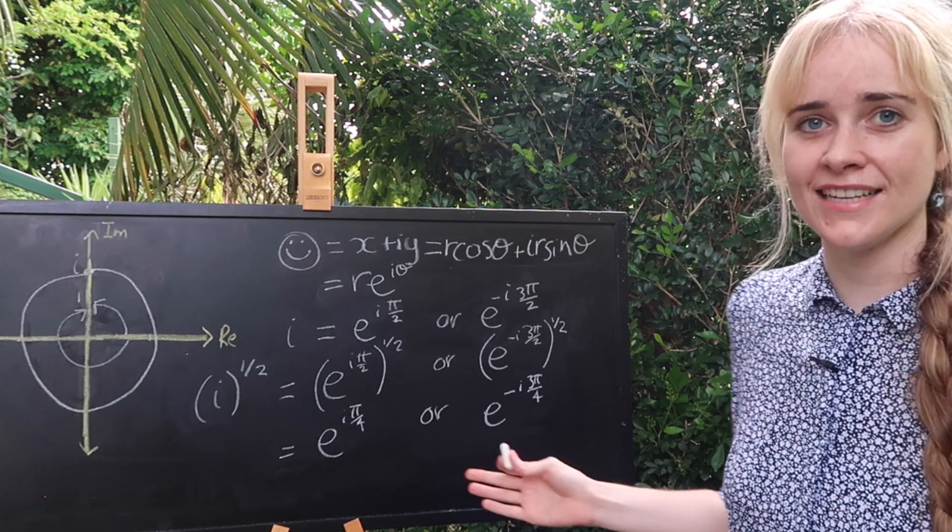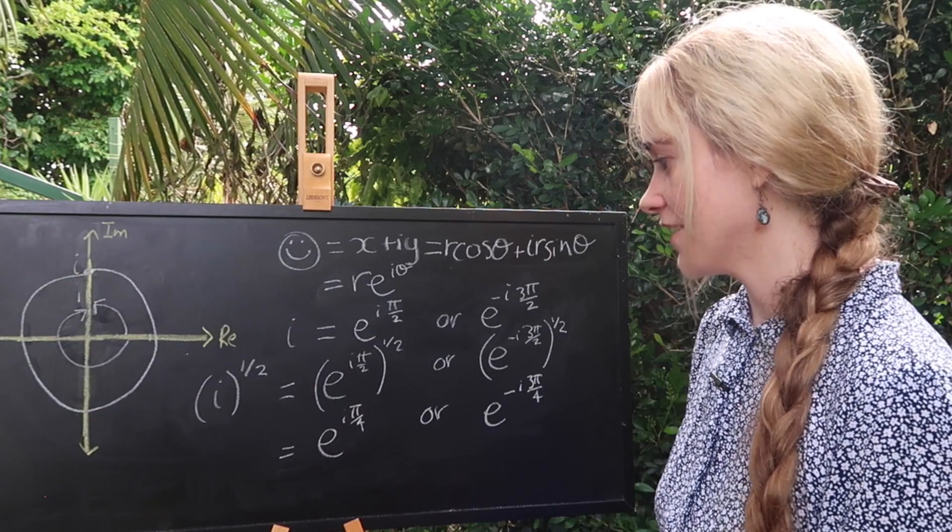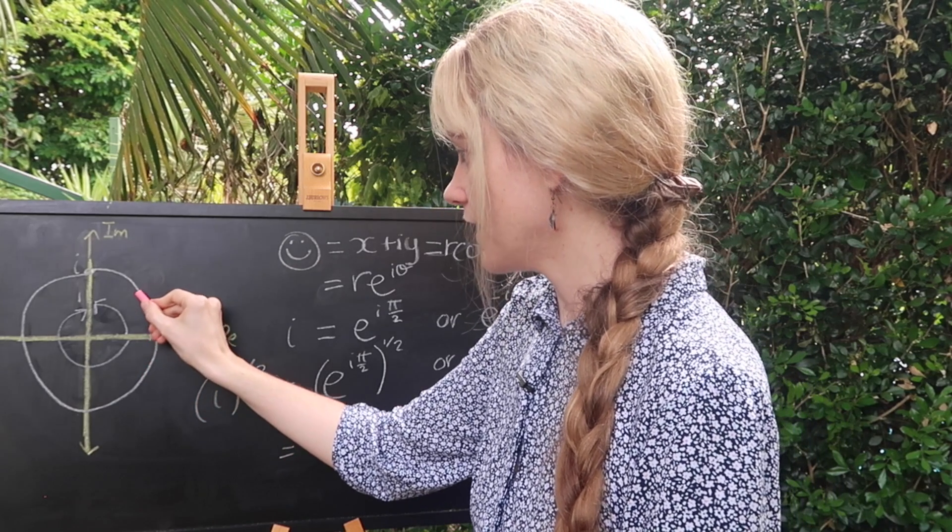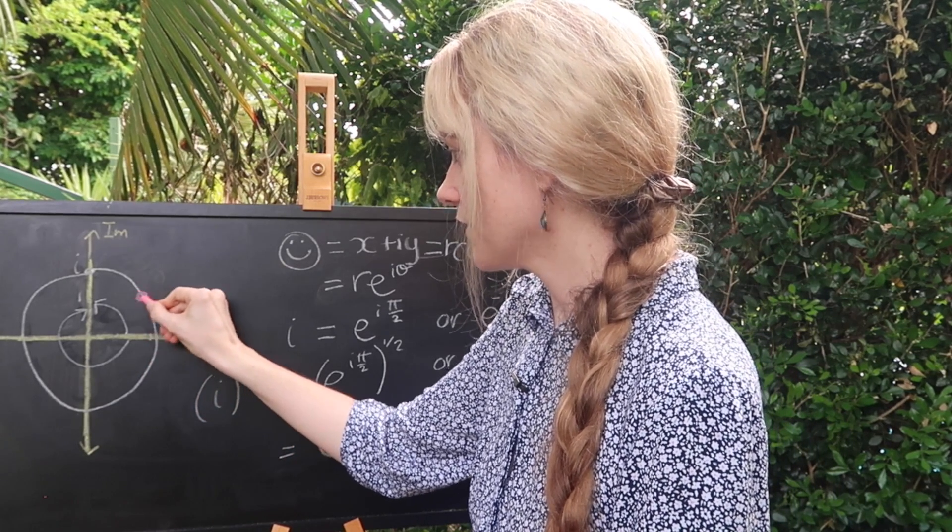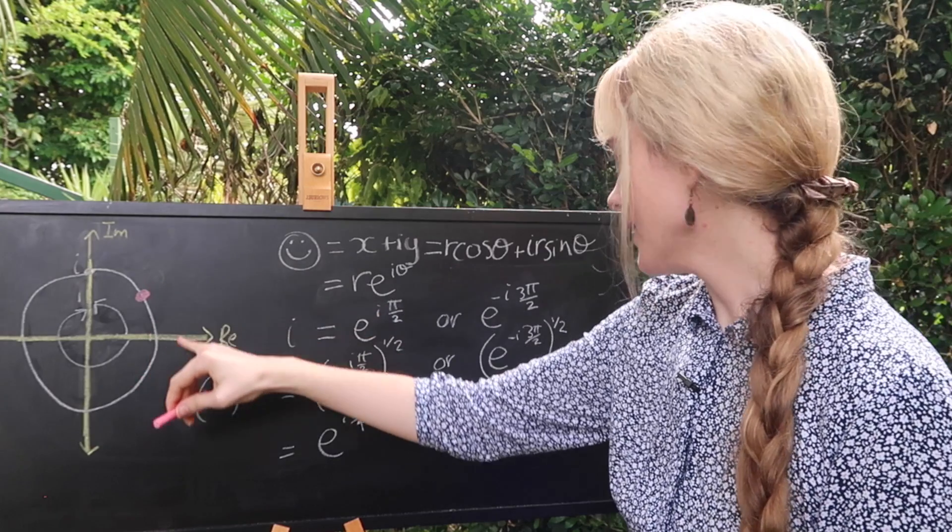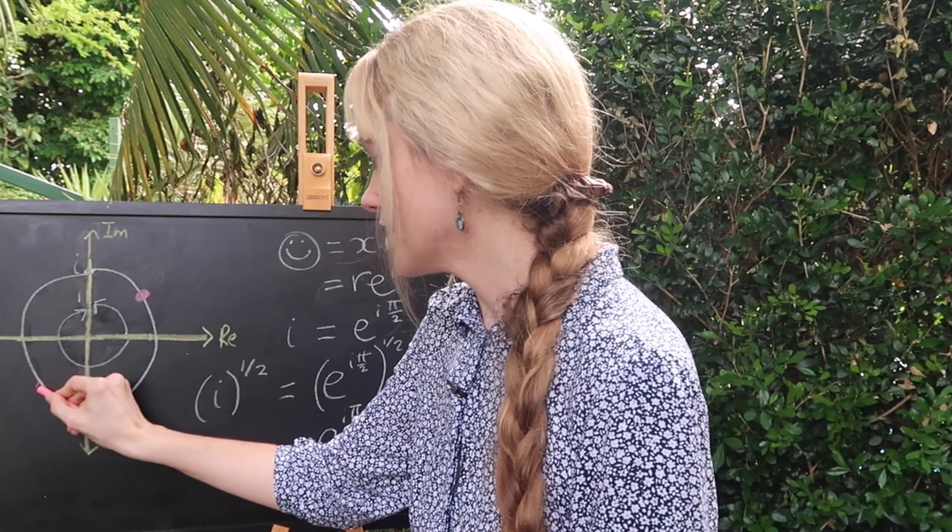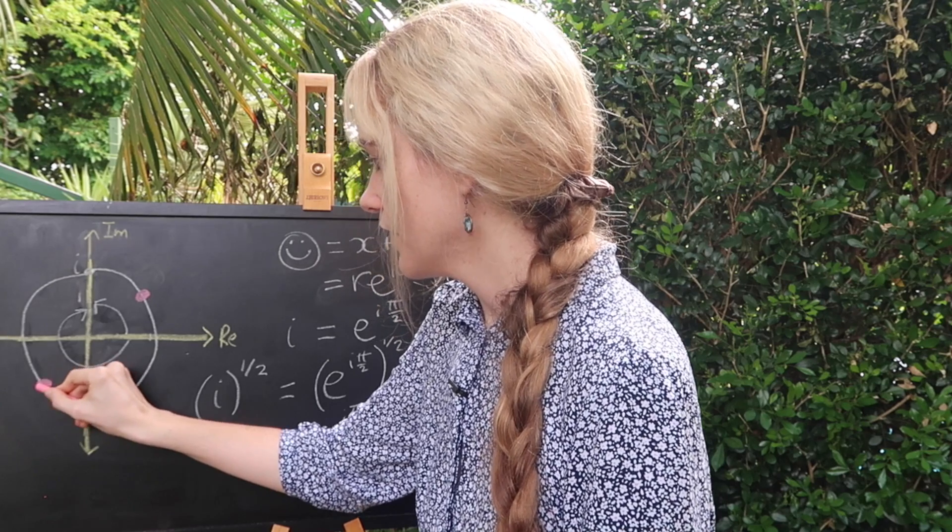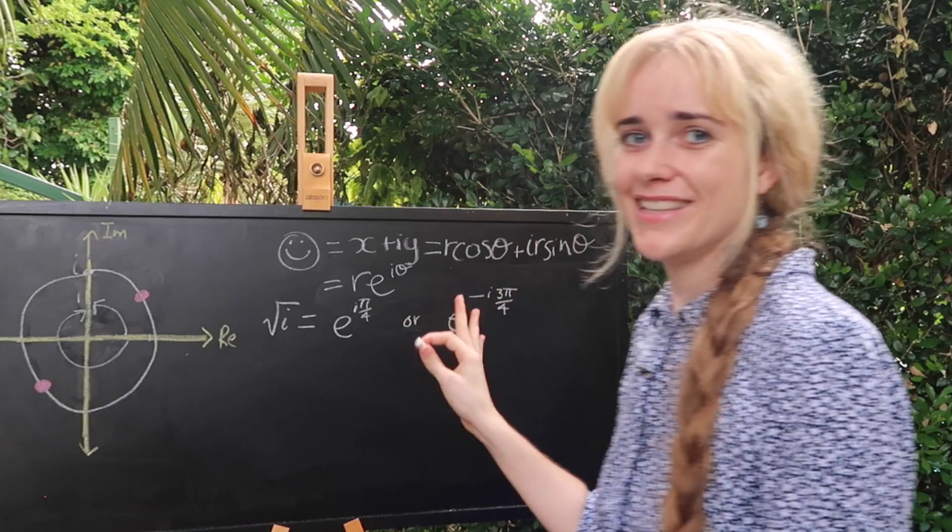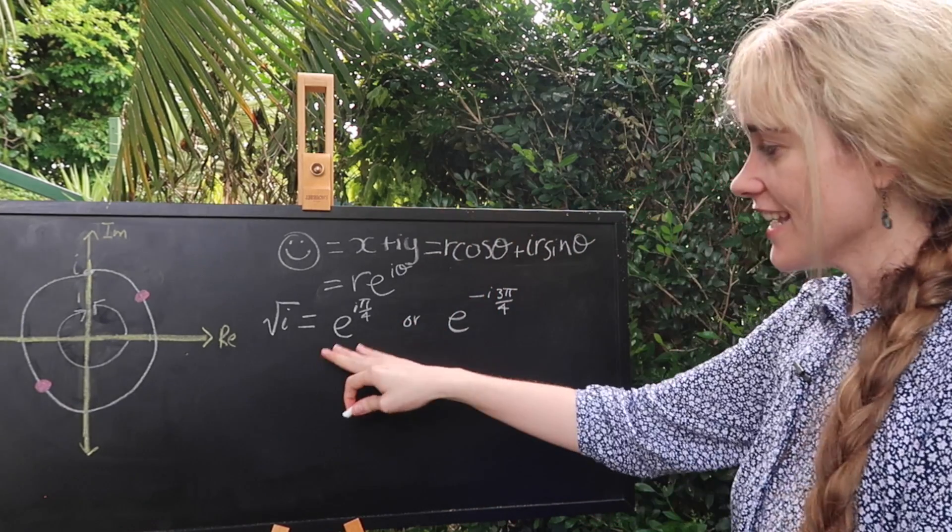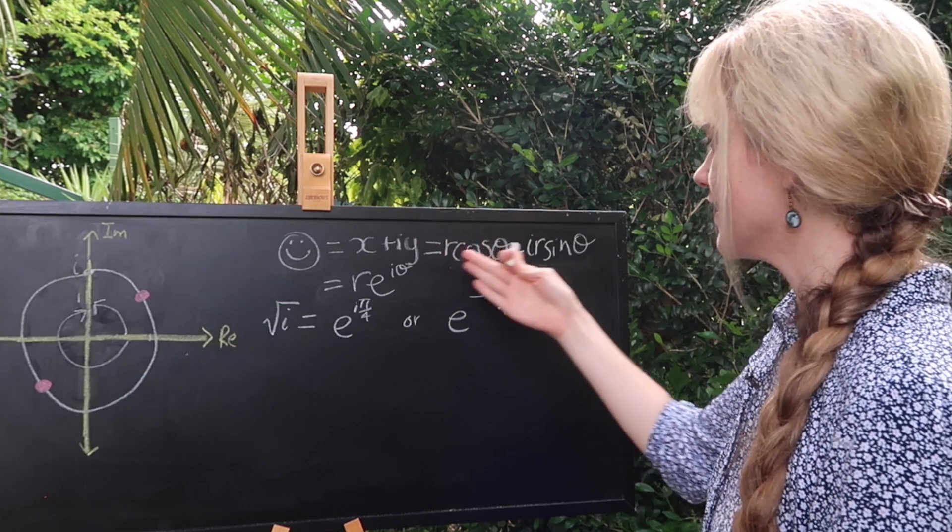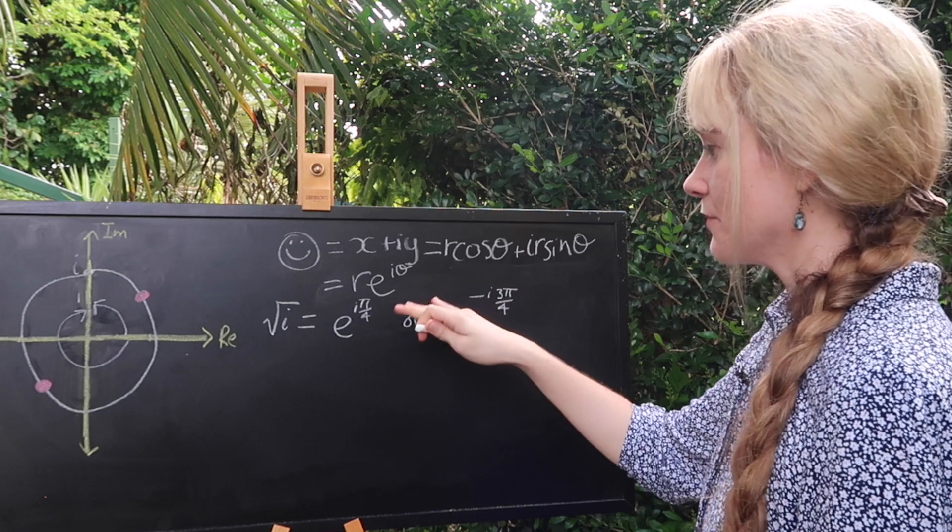Now we can actually find these solutions on our unit circle over here so a theta of pi over four is going to be halfway up here, that's going to be our first solution to the square root of i. Our next solution will be minus three quarters pi which would place us opposite over here. That's what our two solutions look like graphically. Now I've made a little bit more room for ourselves so we can then take these answers that we've already found graphically.